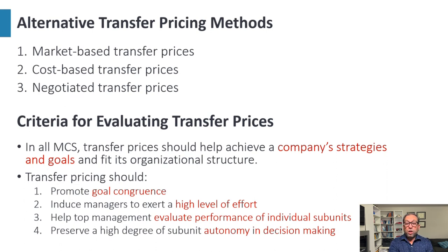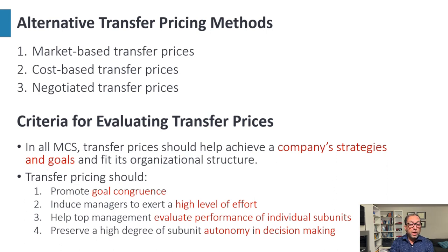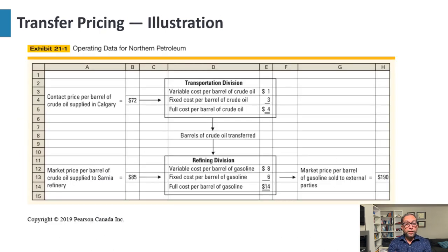In all management control systems, transfer prices should help achieve a company's strategies and goals and fit its organizational structure. Transfer prices should promote goal congruence — everyone trying to produce at minimum cost and sell at a higher price — induce managers to exert a high level of effort, help top management evaluate performance of individual subunits, and preserve a high degree of subunit autonomy in decision making, allowing decentralization.